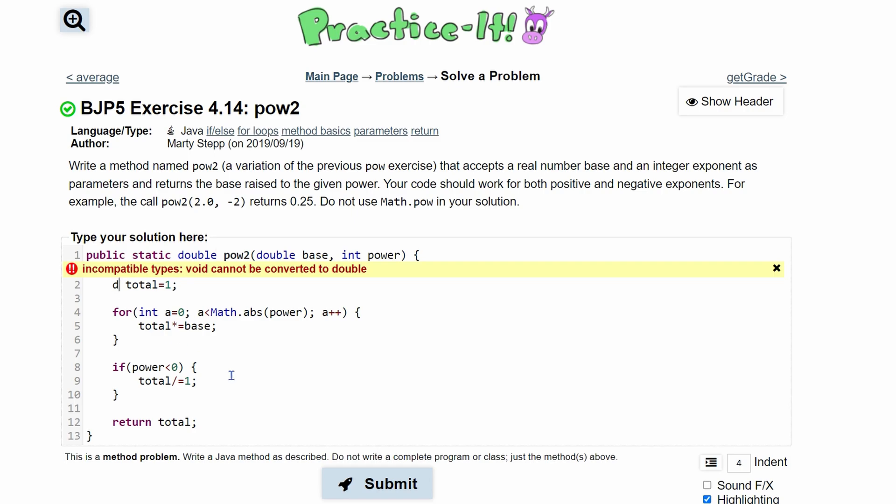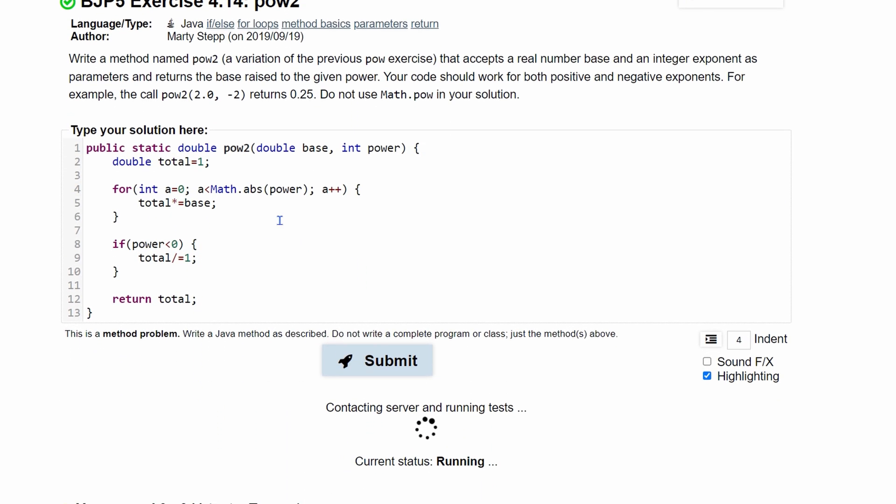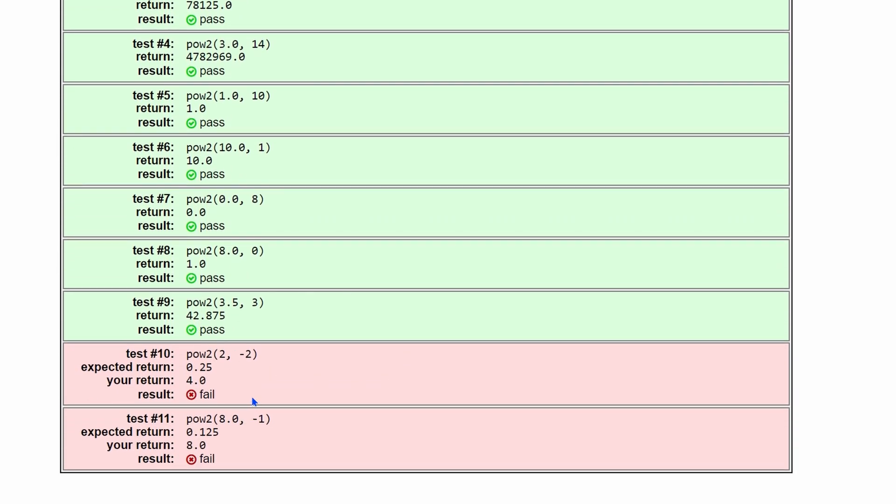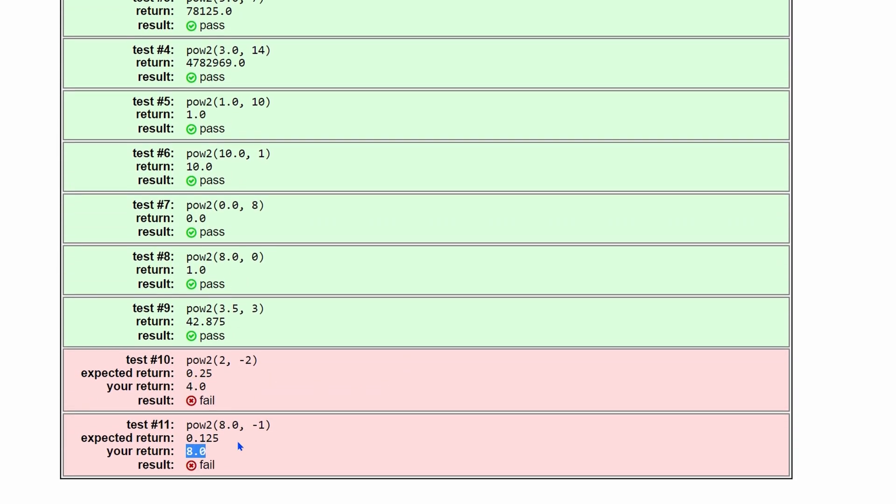This should not be an int. Since we need to return a double, and this is important, we are going to make total a double. So we can click submit, and now that everything is perfect, we can see that we have not passed all the tests, because this is incorrect.